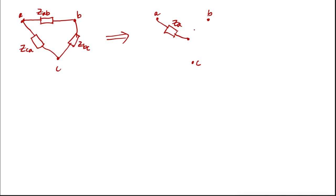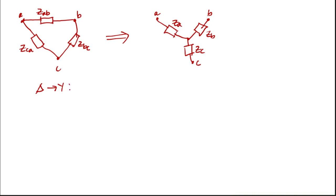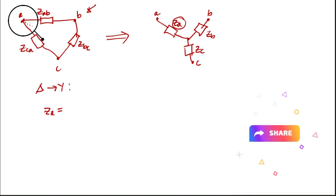When converted to a Y connection, it becomes Za, since this is connected at point A. This one is Zb, and the other one is Zc. You'll notice that the value changes from a delta connection to a Y connection. So what is the value of Za based on this delta connection? We are doing a reconnection from delta to Y.